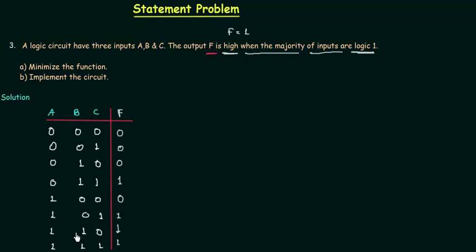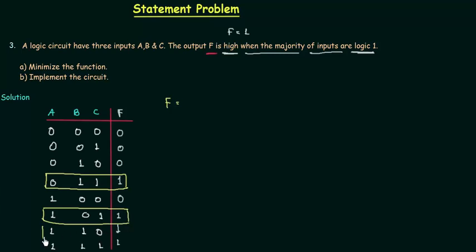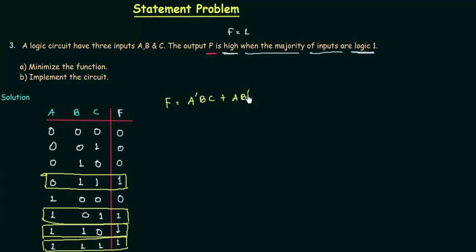The number of 1s is greater than the number of 0s in the input for those cases. We only consider the cases when the function is high — we have four such cases, giving us four minterms. For the first case, a=0, b=1, c=1, so the minterm is a'bc. For the second case, a=1, b=0, c=1, giving ab'c. For the third case, a=1, b=1, c=0, giving abc'. For the last case, all three variables are high, giving abc.